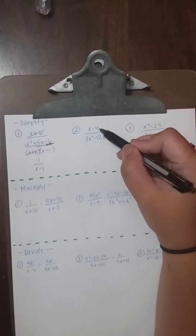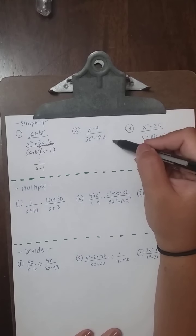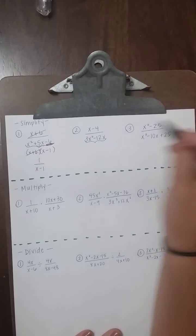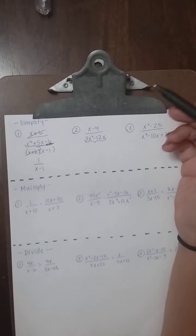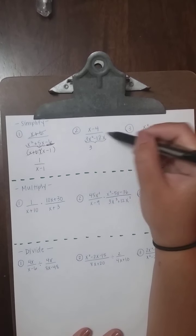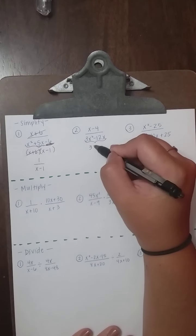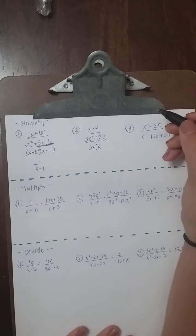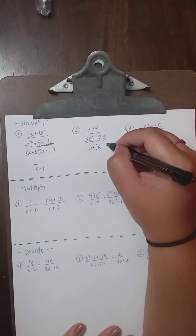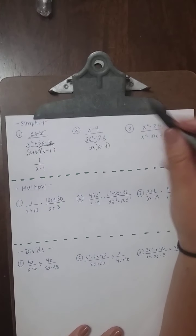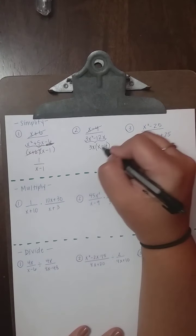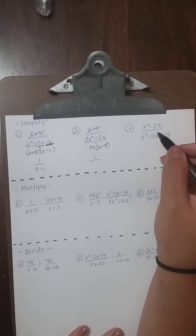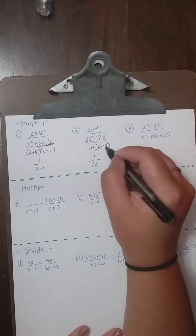For example 2: (x − 4) on top, and the bottom is 3x² − 12x. Factor the bottom using GCF — the biggest common factor of 3 and 12 is 3, and they both have at least one x. So factor out 3x: 3x(x − 4). The (x − 4) on top and bottom cancel, leaving 1 over 3x.